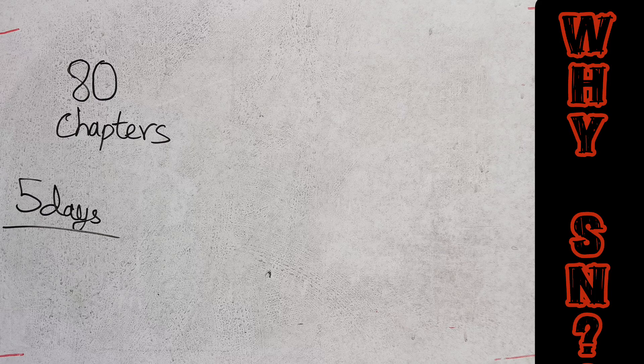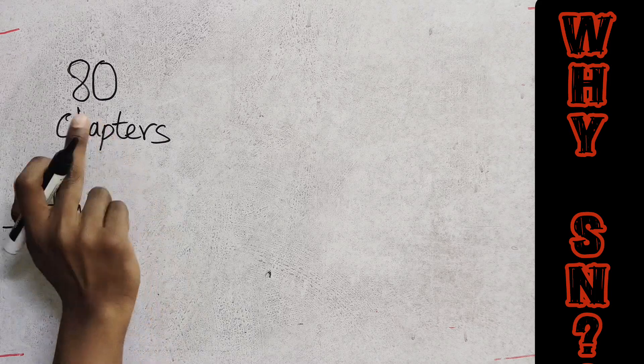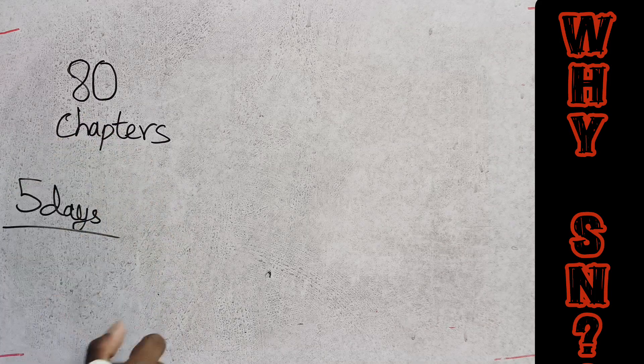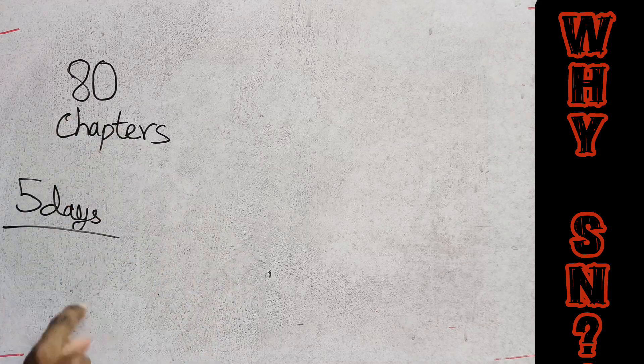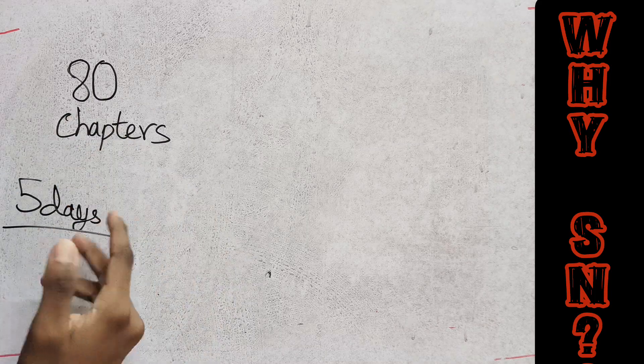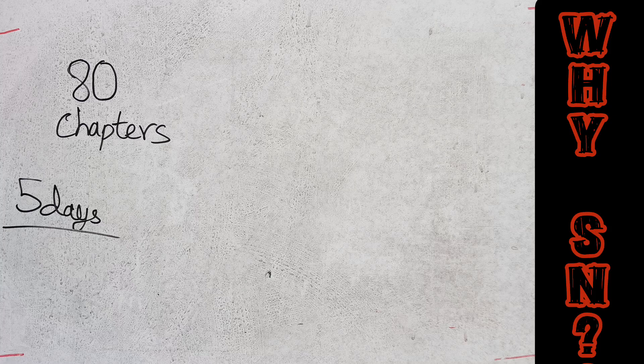So now you have 60 chapters — physics, chemistry, biology. Actually now you have 80 chapters. How can you complete these 80 chapters? How can you complete those in 5 days?